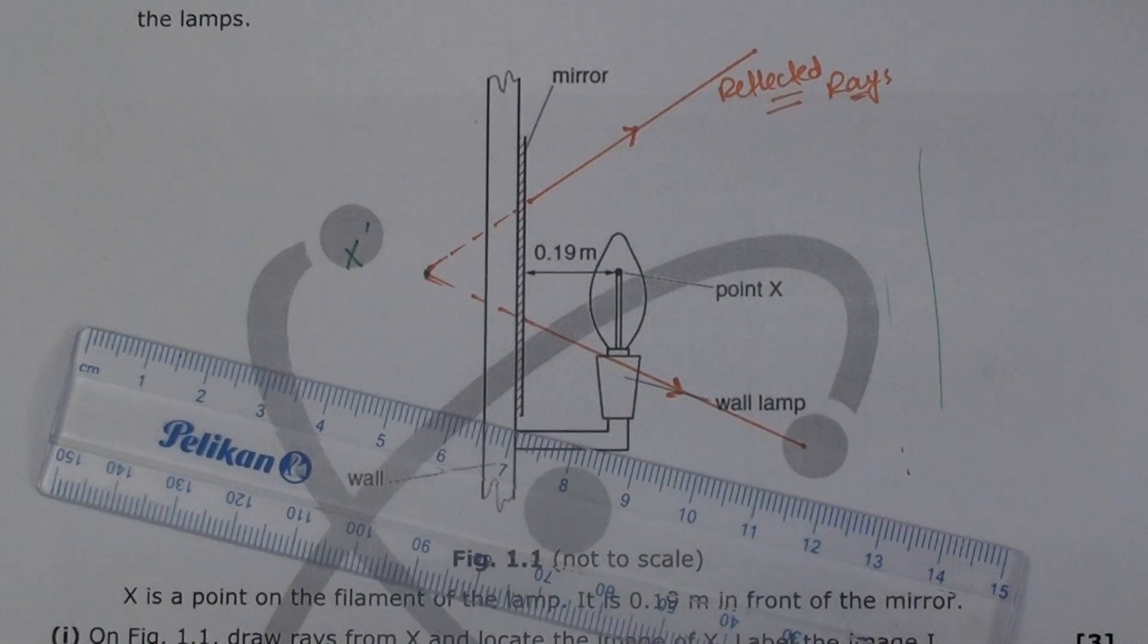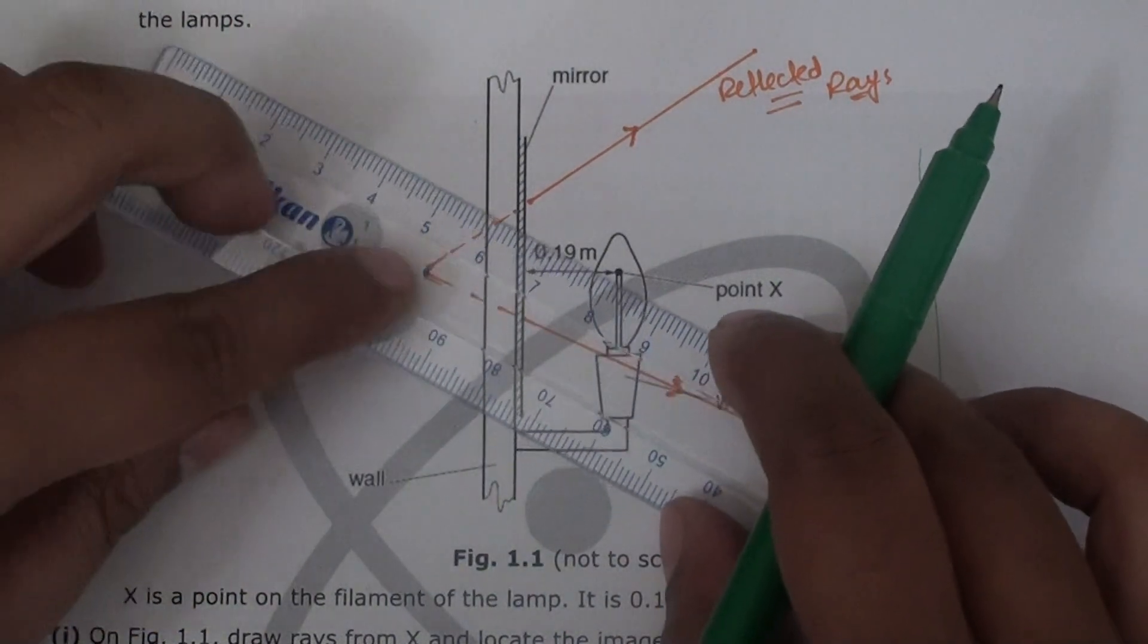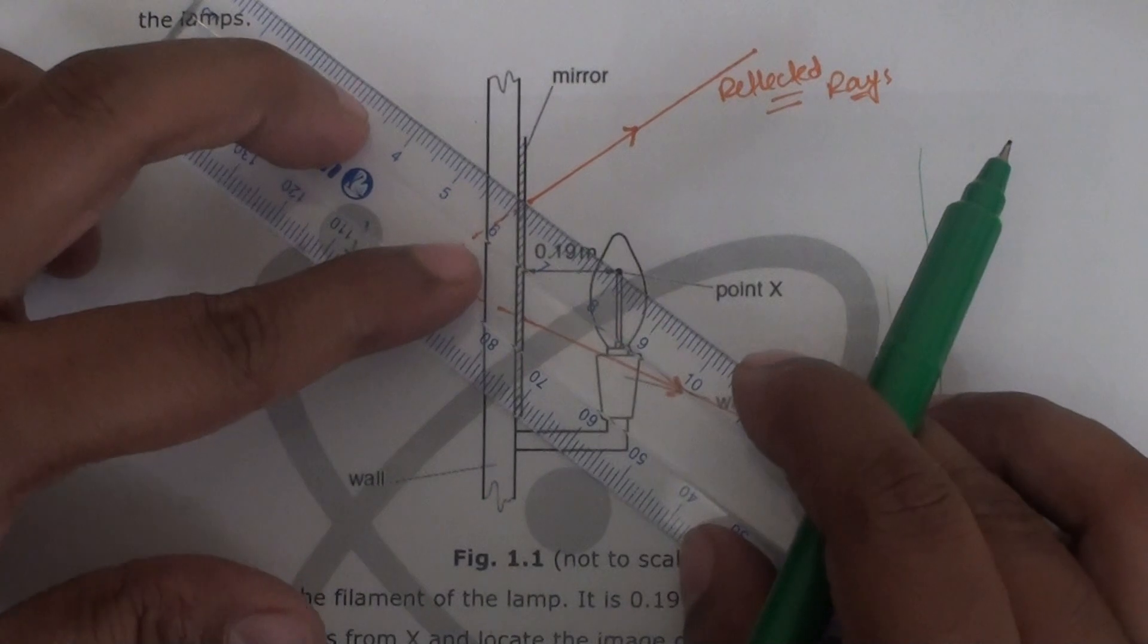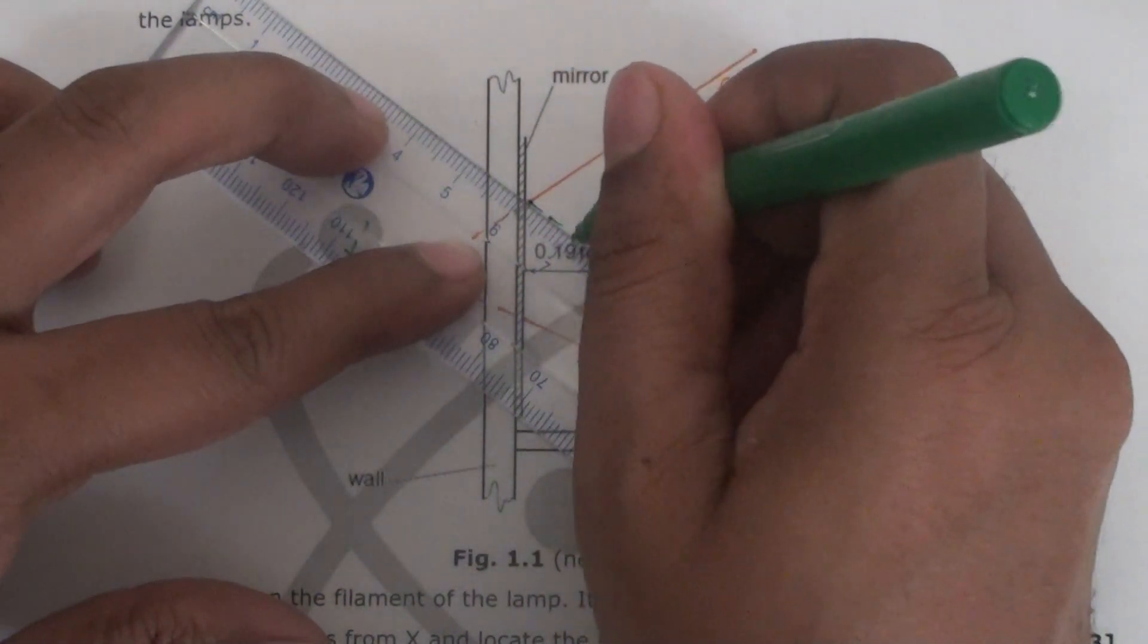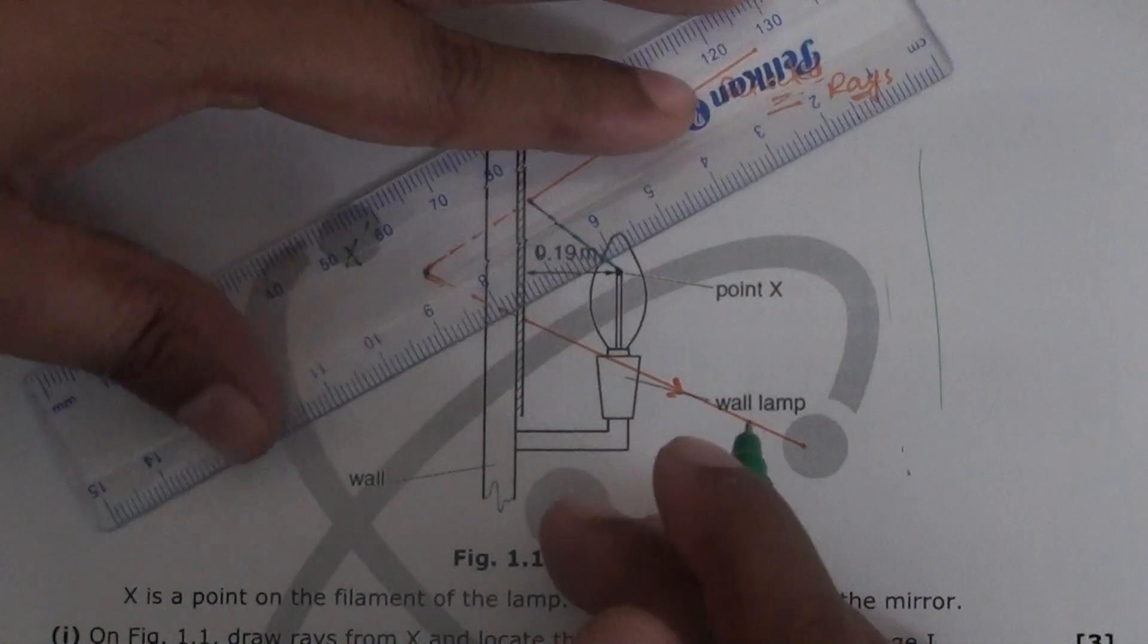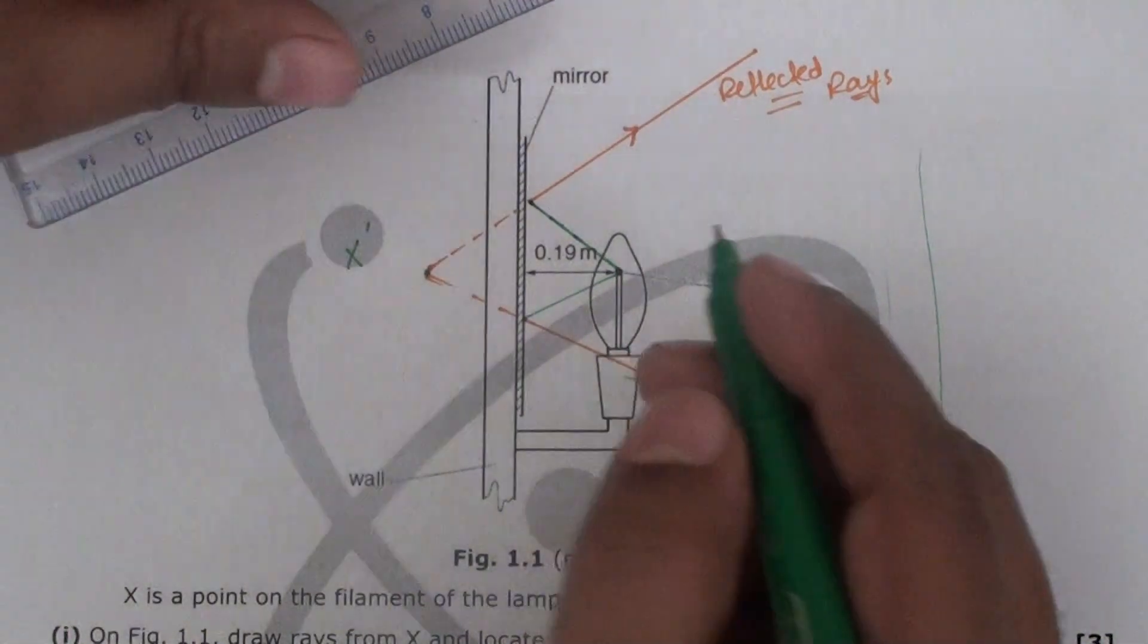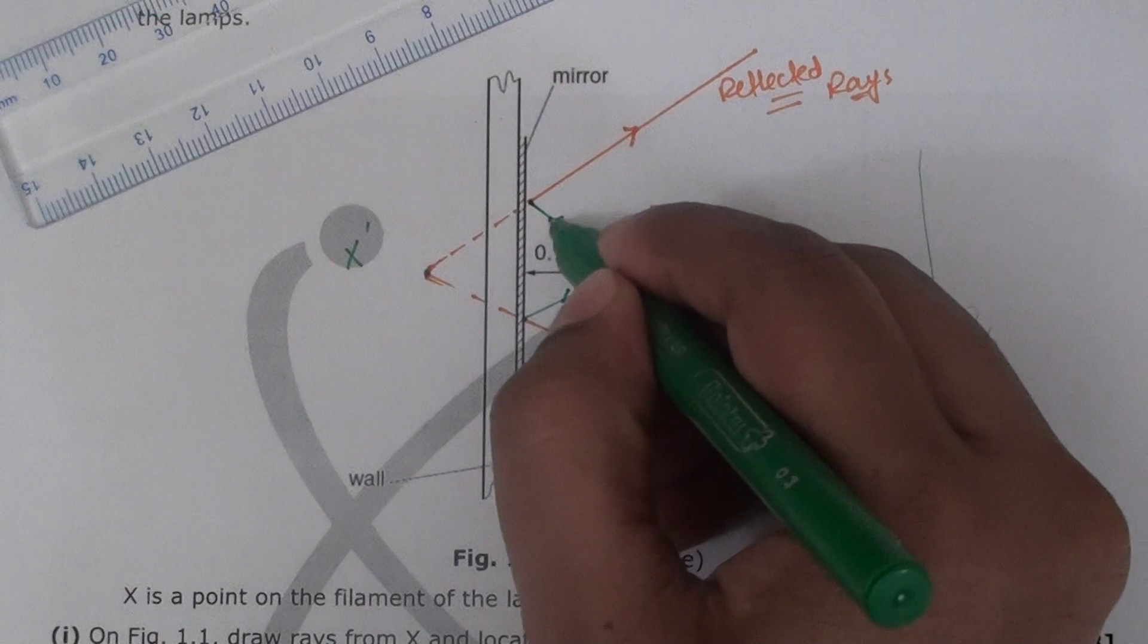With another color I'm going to draw the incident rays. Now incident rays - obviously I have to join that from the point where the filament strikes. So I have to draw a continuous line. So there you go. This is the incident ray. These are incident rays.